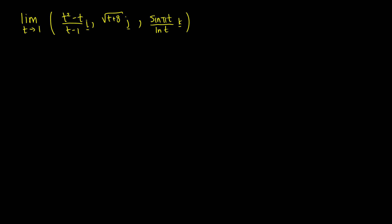So to do this, we're going to end up taking the limit as t approaches one of t squared minus t over t minus one, and this will be times the vector i. So I'm going to do these all independently.